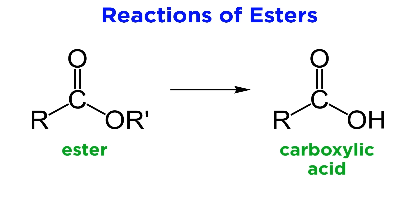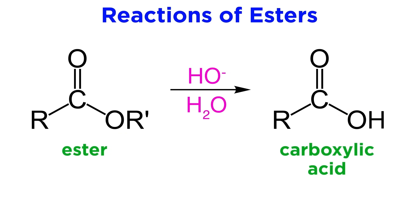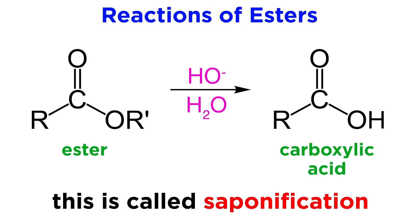Now let's talk about what esters can do. We can certainly go from the ester back to the carboxylic acid. Just as Fischer esterification involves an alcohol replacing the hydroxyl, hydrolysis of the ester allows hydroxide to replace the alkoxide. Ester hydrolysis in basic solution is called saponification, since this is how soap is made.